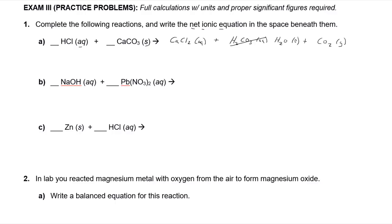Now we need to balance it. We've got two chlorides, so we need two HCl molecules. We've got one calcium and one carbonate that got broken up, so we keep a coefficient of one there. Very straightforward.